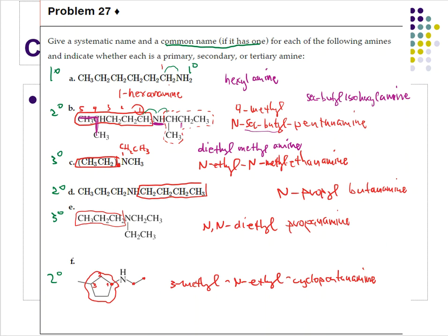For D, this also has a common name — very straightforward pieces. To the left I have a propyl and to the right I have a butyl, so in alphabetical order this is butylpropylamine. For E, again simple clean pieces: to the left a propyl, to the right an ethyl, and down below another ethyl. E comes before P, so this is diethylpropylamine.